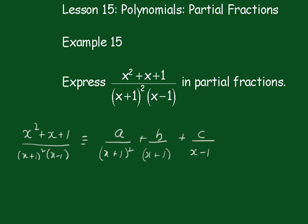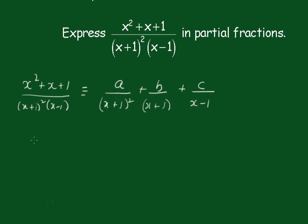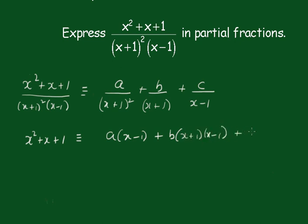So let's go ahead with this one. Looking at the numerators, we get x squared plus x plus 1 is equal to A times x minus 1 plus B times x plus 1 times x minus 1 plus C times x plus 1 all squared. There's quite a bit of expansion to do that way, but I'll use the substitution technique instead.